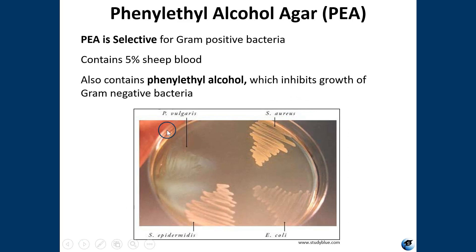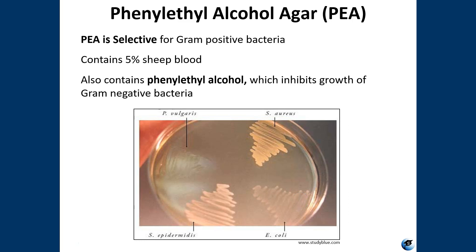In this figure you have Proteus vulgaris, Staph aureus, E. coli, and Staph epidermidis. Proteus vulgaris is a gram-negative bacterium. E. coli is gram-negative as well, and you can see it is actually growing on this media but not in great abundance — it looks like it's struggling, which is how it should look on PEA. Whereas both of your Staphylococci species, the gram-positive species, are thriving. They look great and are not having any trouble. So those are your three selective media.